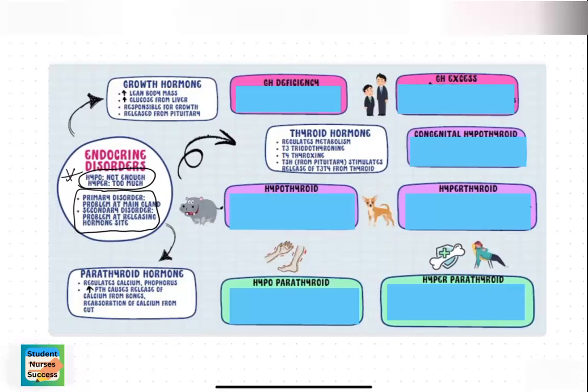Second, we will discuss how disorders can be either primary or secondary in nature. Primary means that the actual gland is not making or is over-making the hormone. Secondary means that the problem is at the site of the releasing hormone, which is often the pituitary gland, and that the releasing hormone is either making too much or too little, causing the main gland to make too much or too little.